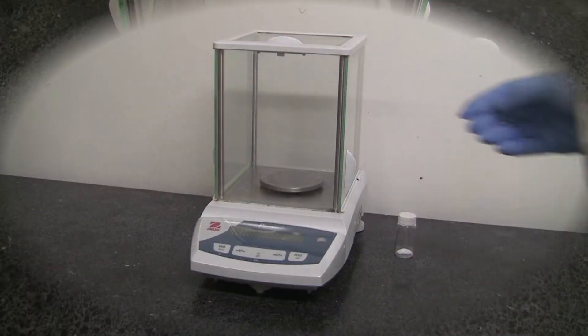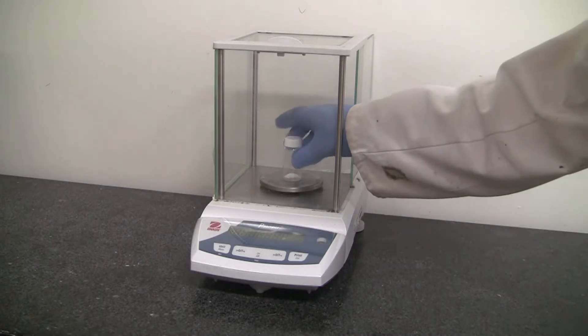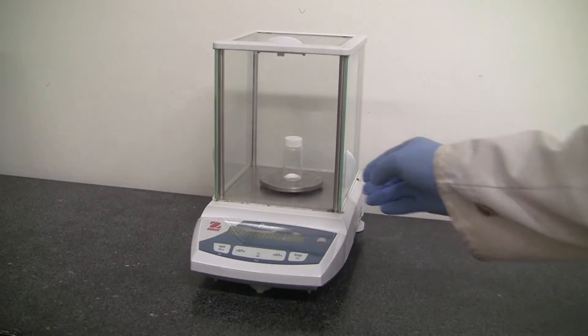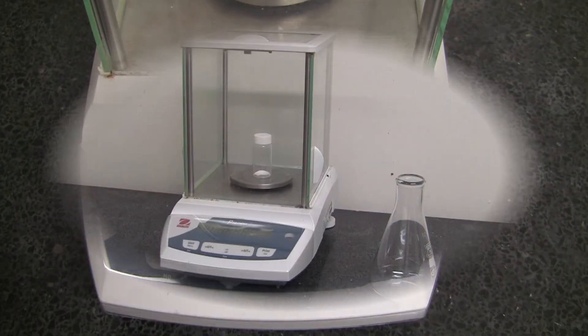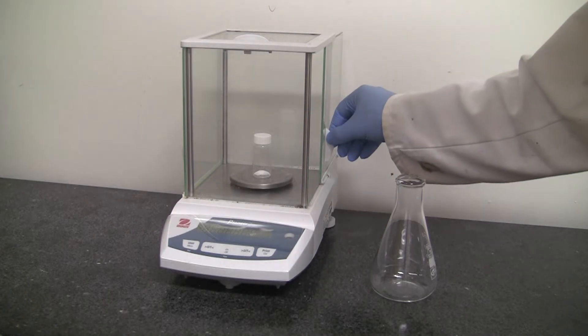Open the door, place your sample in, and slide the door shut. Take a reading of your initial mass, all four decimal places. Once you've recorded that mass, slide the door open.